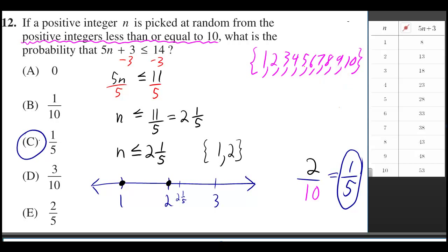We want to know what's the probability that when I take one of those numbers and plug it into the formula 5n + 3, that it comes out less than or equal to 14.